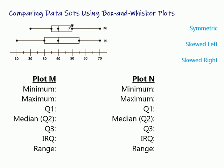Notice that this box is smaller than this box. The box on data set M is smaller than the box on N. So the data set in M is closer together, and in data set N, our data is spread out a little bit more. That's just one thing that we can notice.